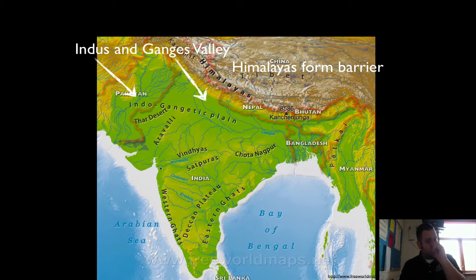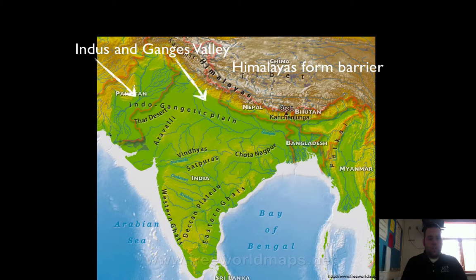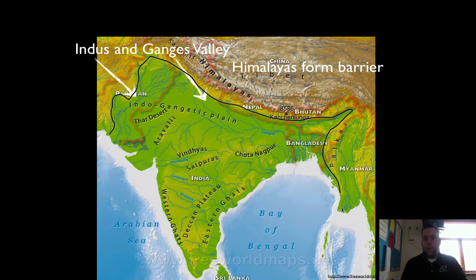Another natural barrier is the Himalayas — this mountain range located in the north of India. There's also a smaller mountain range to the west. Notice wherever it's a yellowish-brownish color is where mountains or higher lands are. These are the natural barriers for India to the north, east, and west. To the south, the natural barrier is water.